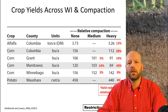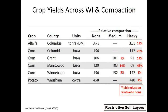Here's an example of the yield impact compaction can have, showing different crops in different counties of the state, with compaction levels ranging from none to medium to heavy. The numbers in red show the reduction in yield relative to no compaction. For example, alfalfa shows a 13% reduction in yield, and it can go as high as 43% for corn — making this a significant issue for productivity.